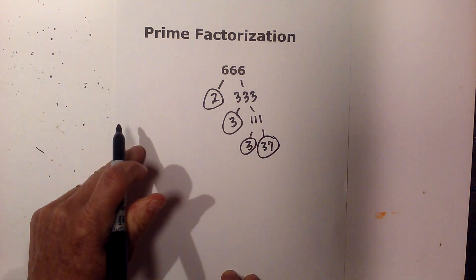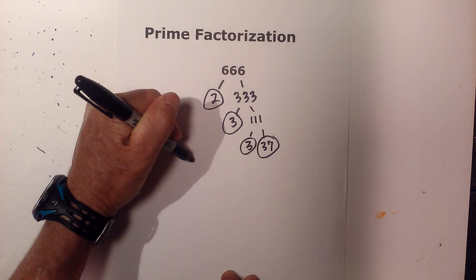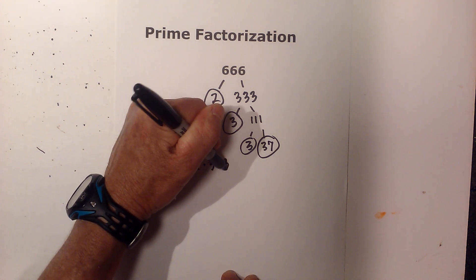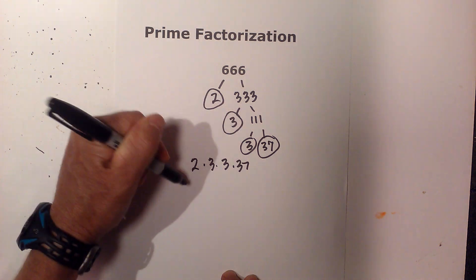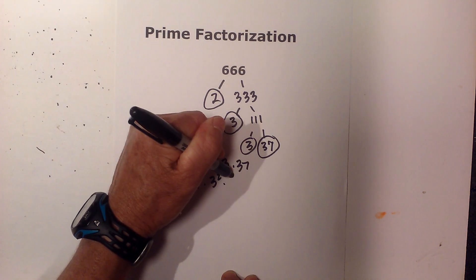Circle both of these because they are prime. So the prime factorization of 666 is 2 times 3 times 3 times 37. And you could write this 2 times 3 squared times 37.